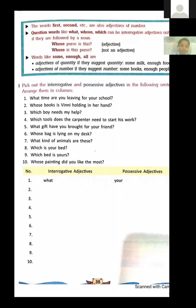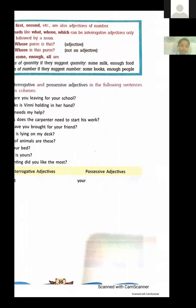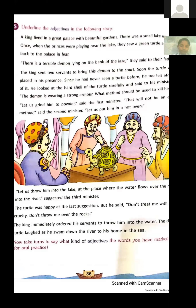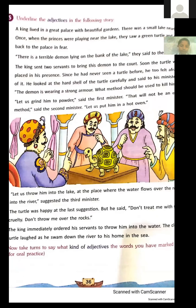Next part: underline the adjectives in the following story. We will do it line by line. First: a palace with beautiful gardens — great and beautiful are adjectives of quality. Next: 'There was a small lake nearby' — small is an adjective of quality. What kind of lake? Small.